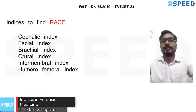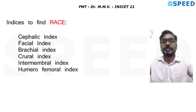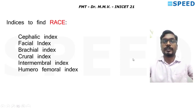We'll start from where we left yesterday. For continuity, I'm starting from the first leg again. Indices to find race are: cephalic index, facial index, brachial, crural, intermembral index, humerofemoral index — these are the six indices to find race. Brachycephalic belongs to Mongols and Japanese; mesocephalic belongs to Caucasoid and Chinese; dolichocephalic belongs to Dravidian, Aurean, Negroid, and Aborigines.